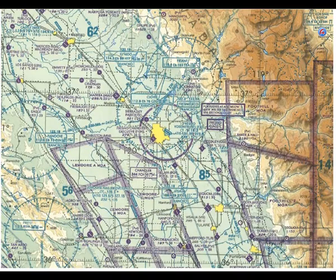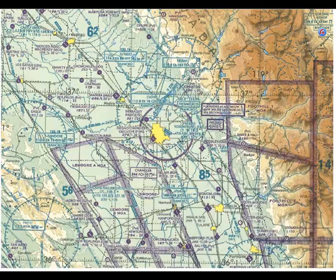Somebody always asks me: why do we have sectional charts and world aeronautical charts? Sectional charts are for slow airplanes, and WAC charts are for faster airplanes. If I'm flying an airplane VFR at 200 miles an hour, I'll cover the same chart length on a WAC as an airplane going 100 miles an hour covers on a sectional. I'm used to flying around at 90 knots — just over 100 miles an hour — so I generally don't fly with WAC charts.